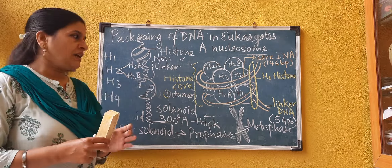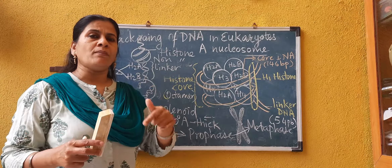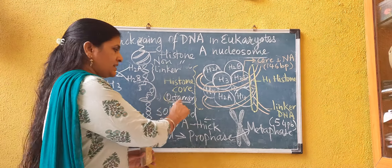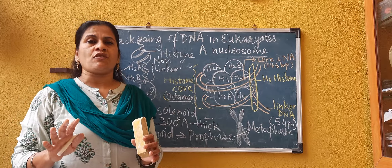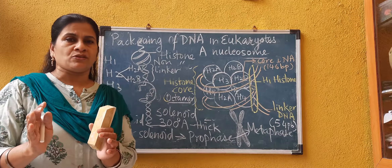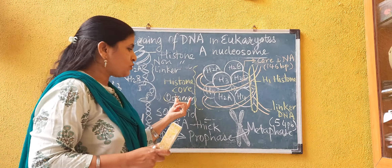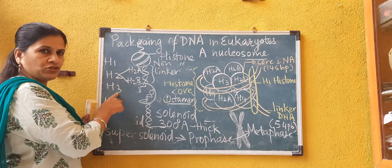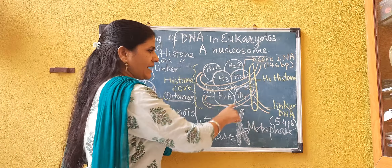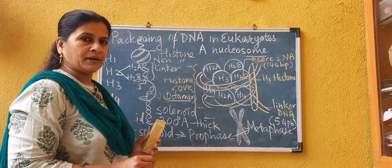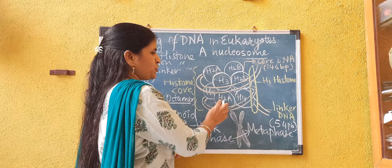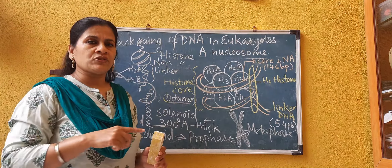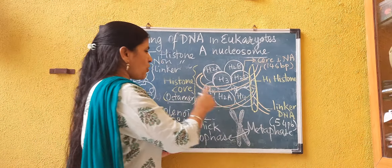For packaging of DNA, these histone molecules gather together and form a histone core. Each histone core is also called an octamer. The term octamer is given because there are eight molecules of histone protein which gather together to form a nucleosome or histone core. Those eight molecules are: two of H2A, two molecules of H2B, two molecules of H3, and two molecules of H4. In the diagram of the histone core octamer, you can see H2A twice, H2B twice, H3 twice, and H4 twice — two molecules of each making an octamer. This is called the histone core.